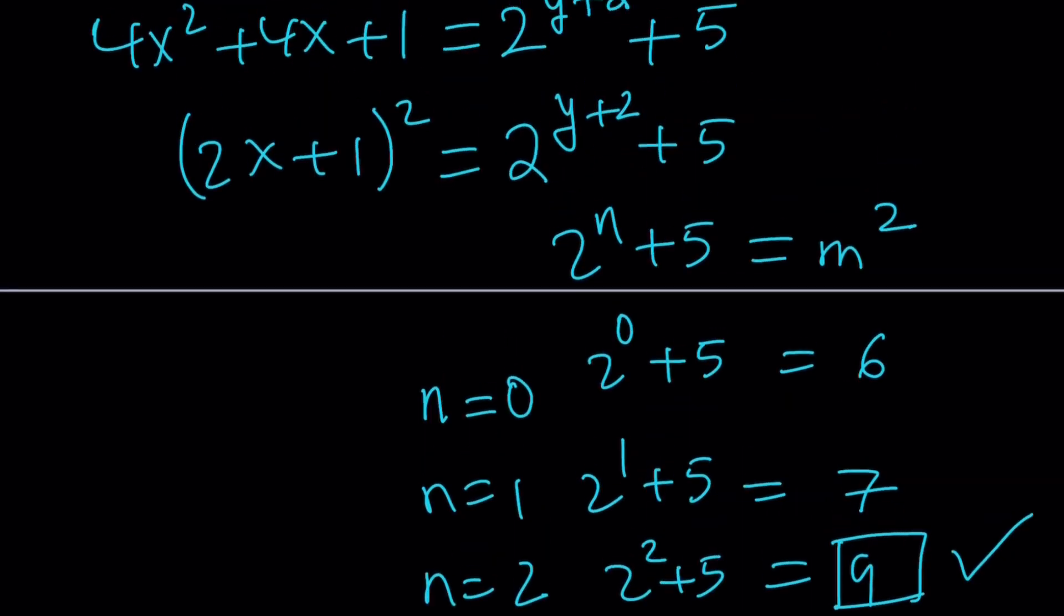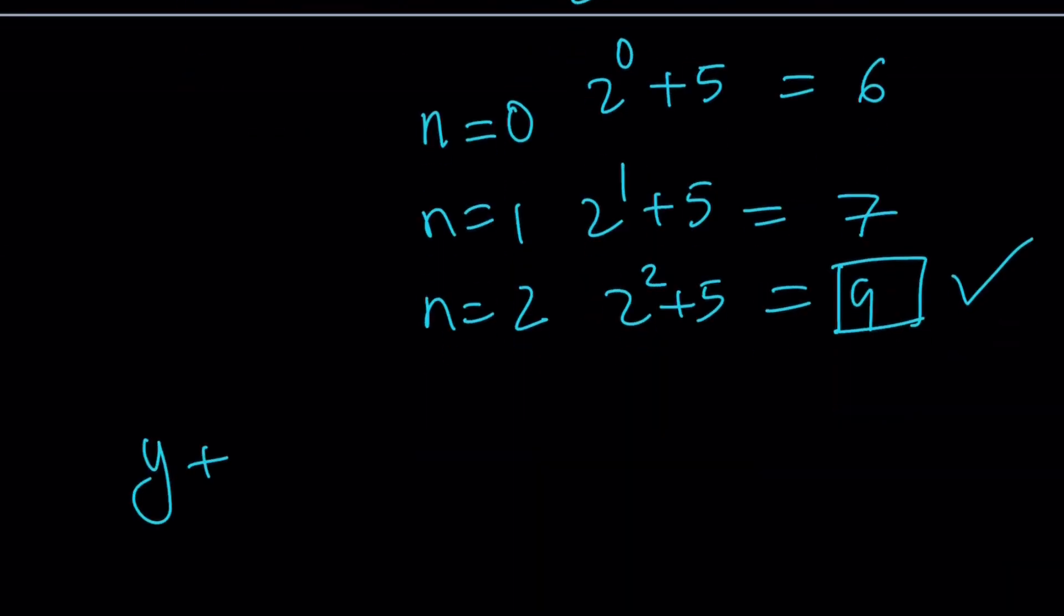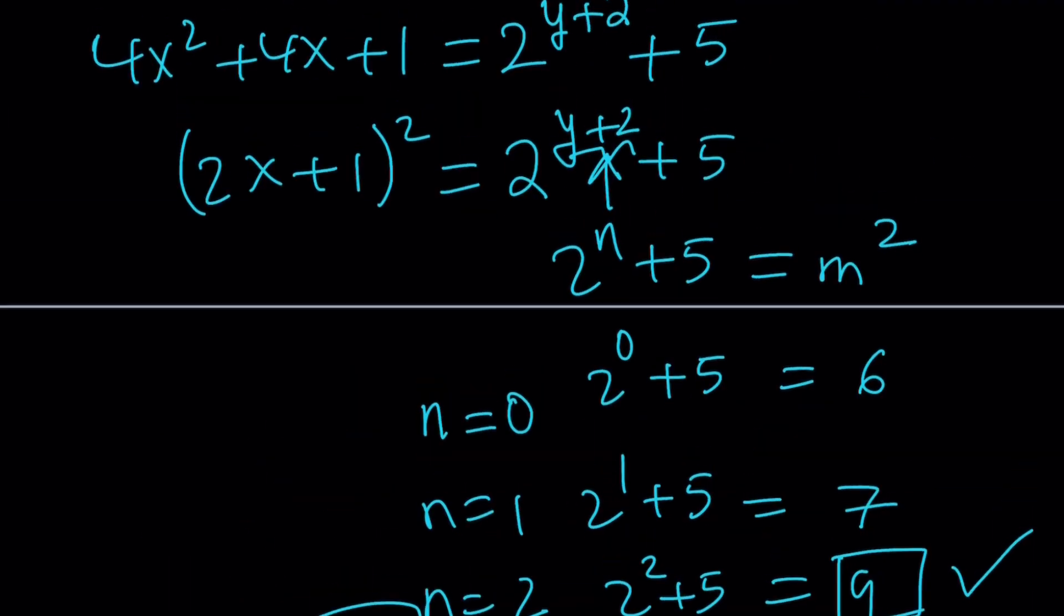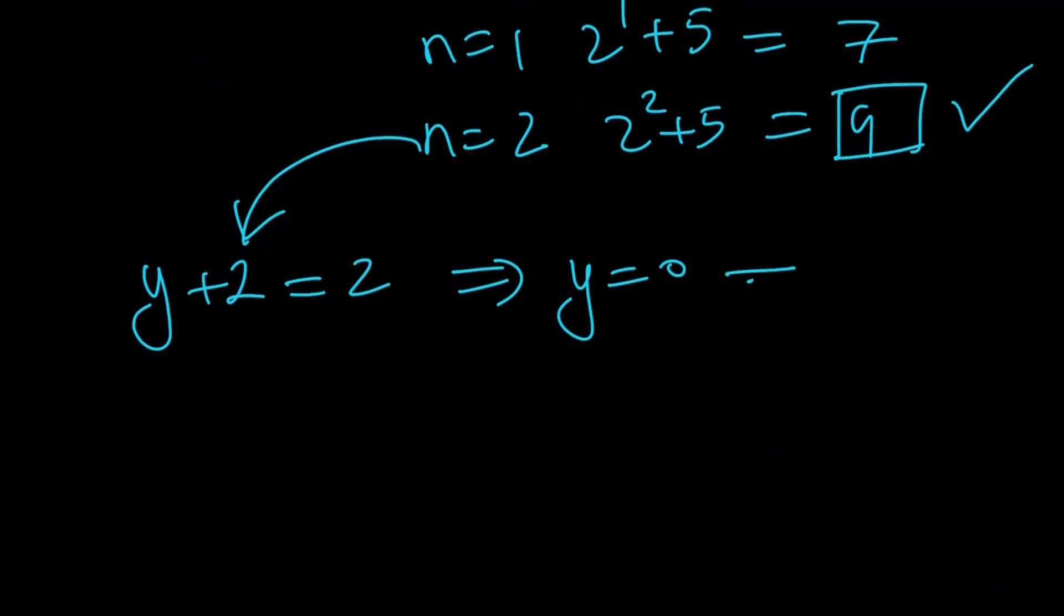And then from there, you're going to find the following. n is y plus 2. You see, I did substitution there. So y plus 2 is equal to 2, because n is equal to 2. And from here, we get y is equal to 0. Obviously, once you know y, you also know x, because m squared, we got 9. So this is supposed to be 9. And 2x plus 1 equals 3. And x equals 1. So this implies x equals 1. Therefore, we got a solution 1, 0.